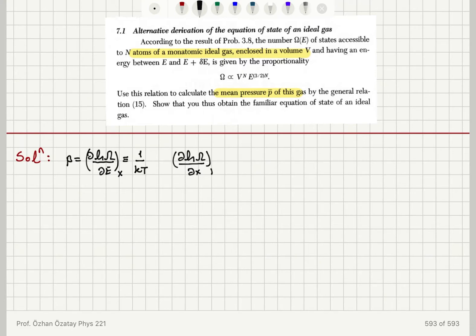the external parameter x at constant energy is minus beta times x bar, where x bar is the mean value of the derivative of the energy of states with respect to the external parameter x.